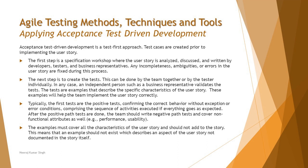The first step is the specification workshop, where the user story is analyzed, discussed, and written by developers, testers, and business representatives together. It's not just one person's responsibility to prepare the test cases — all three members of the team collaborate to write the test cases and also look for review factors like incompleteness, ambiguities, and errors in the user story. This way we are trying to reduce the cost of fixing defects at an early stage.